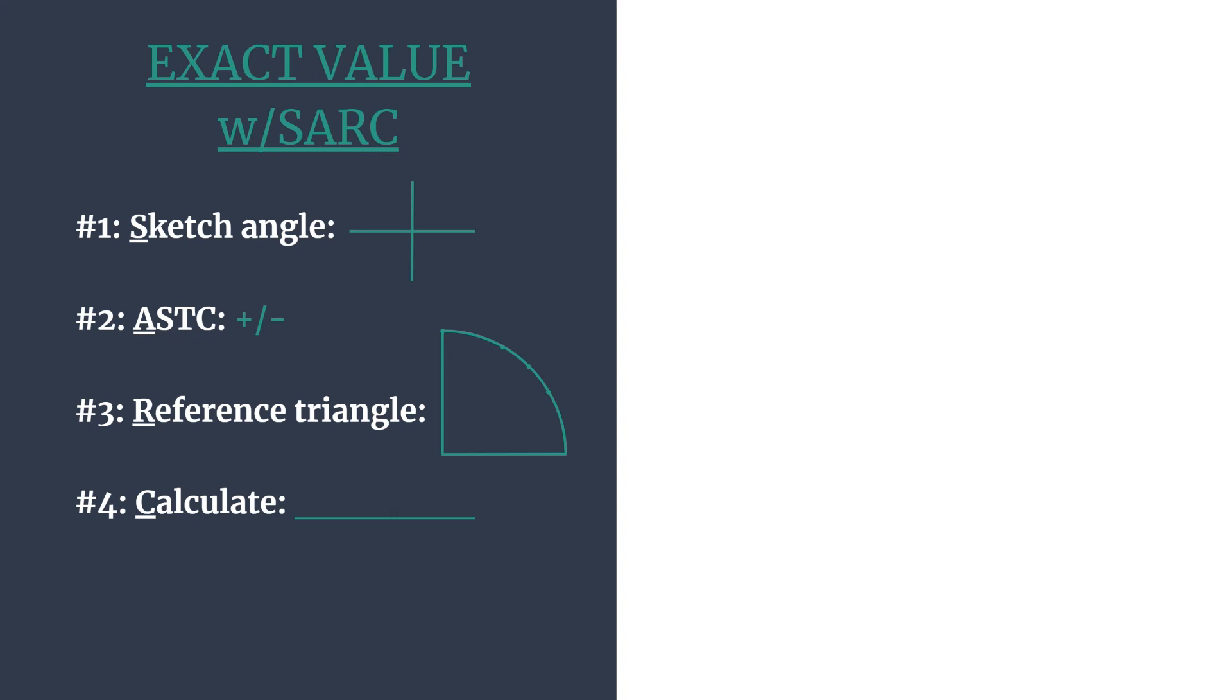The R stands for reference triangle. So you'll find the reference angle, the triangle that goes with that, and the coordinates so that you can do the final step. The C stands for calculate. You'll calculate your trig ratio.